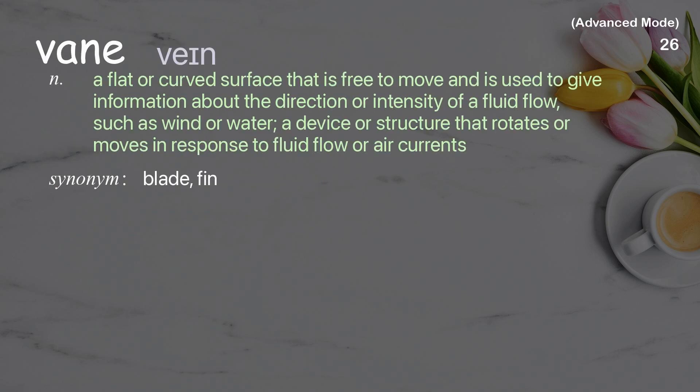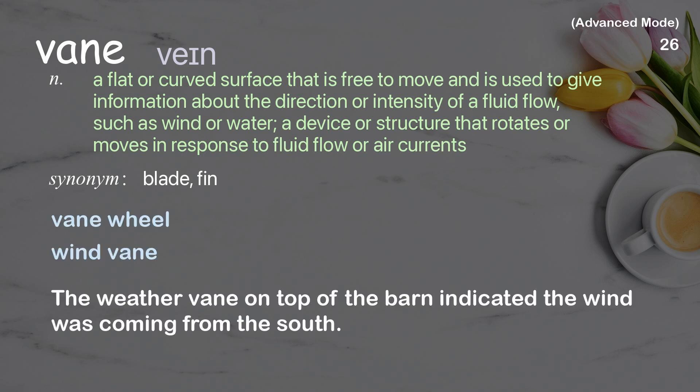Vane: a flat or curved surface that is free to move, used to give information about the direction or intensity of a fluid flow such as wind or water; a device or structure that rotates or moves in response to fluid flow or air currents. Examples: vane wheel, wind vane. The weather vane on top of the barn indicated the wind was coming from the south.